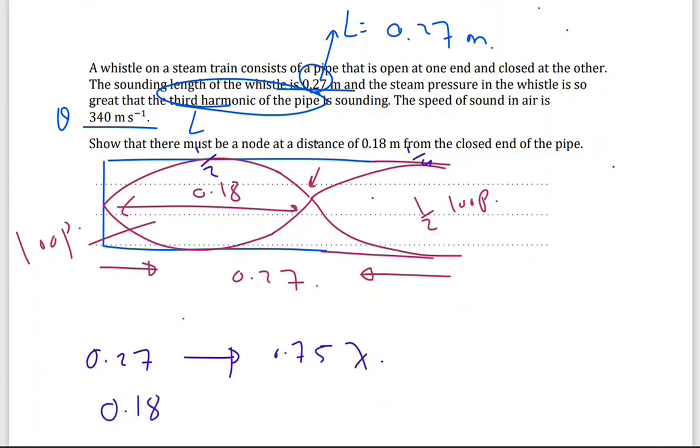I can solve this question in two ways. The first way, the total, the length of the pipe is 0.27. And this corresponds to half, this is a quarter lambda, the distance from here till here, it's a quarter. And this one is half, half plus quarter, so it's 0.75 lambda. When the length is 0.18, I need to prove that here, I should have half lambda.